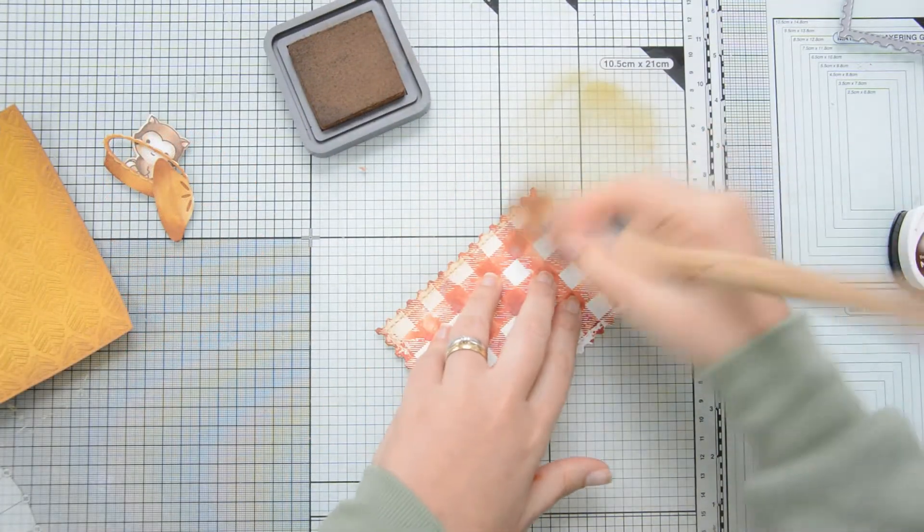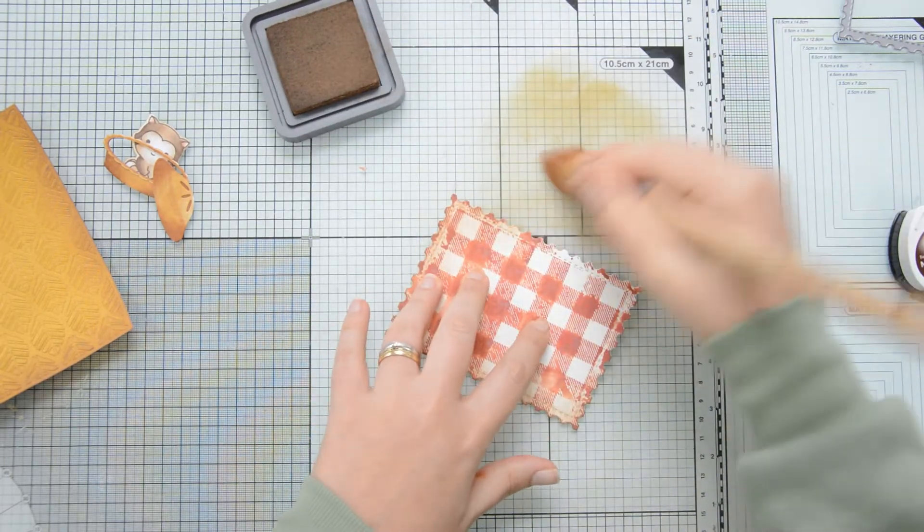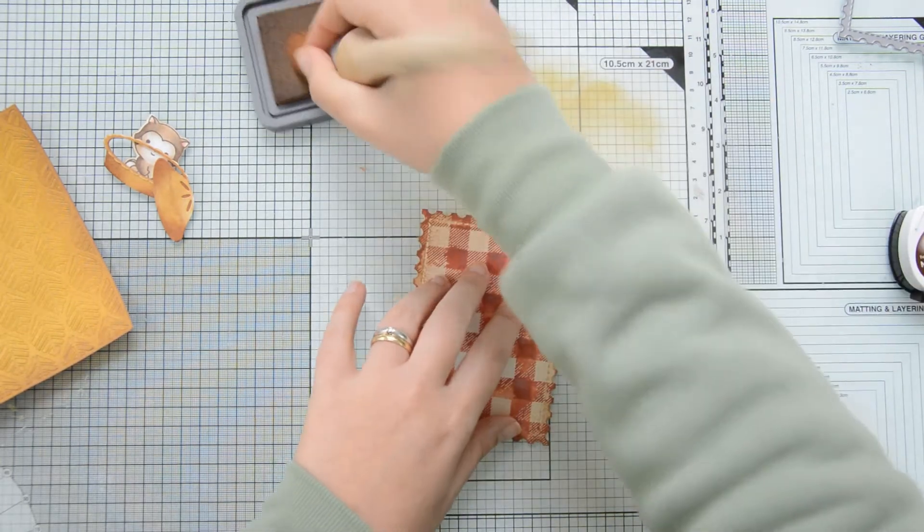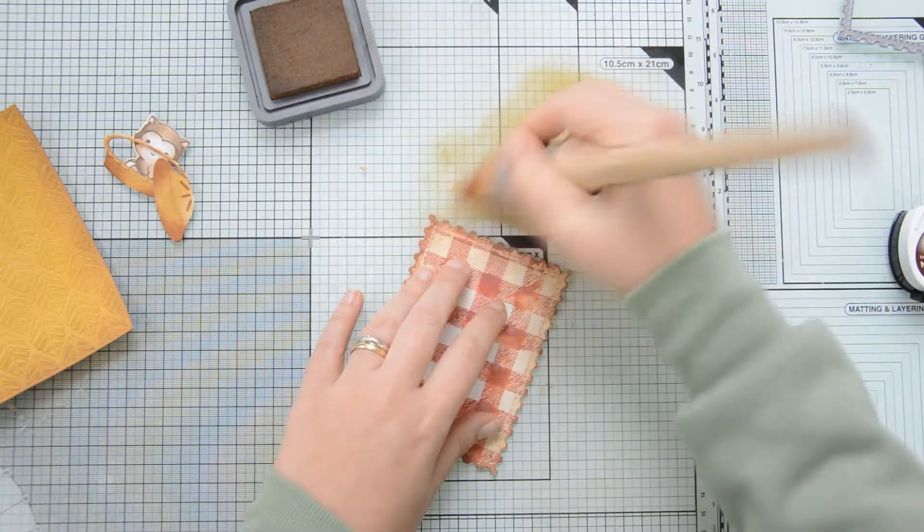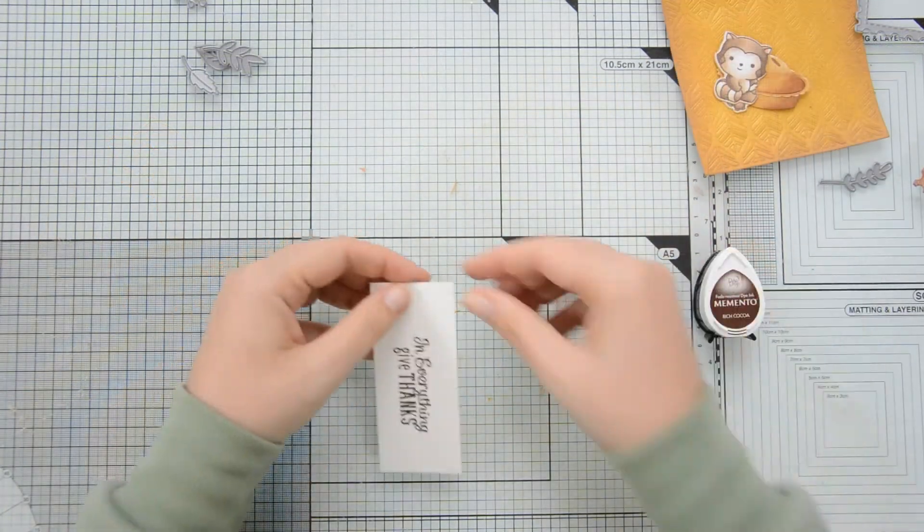I sped up the drying process with my heat gun and like for every other element on this card pretty much I used my stencil brushes and distress oxide in vintage photo to add a bit of a distressed and aged look to that panel as well.